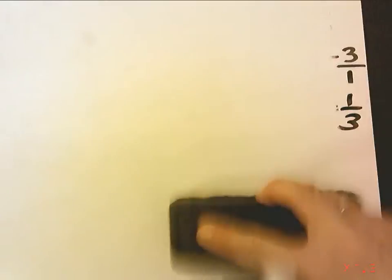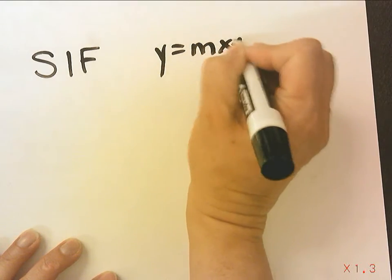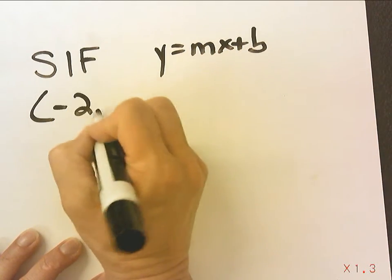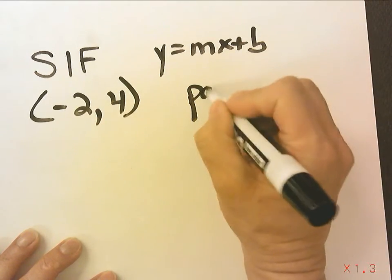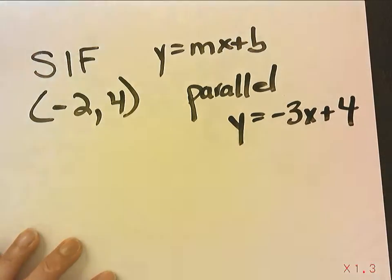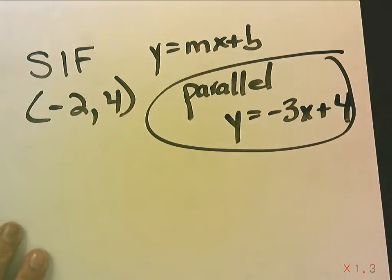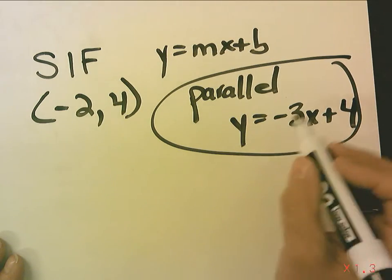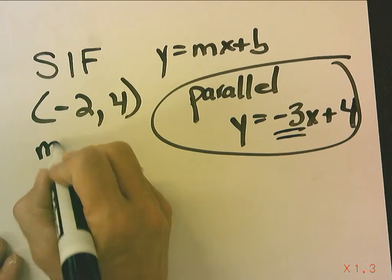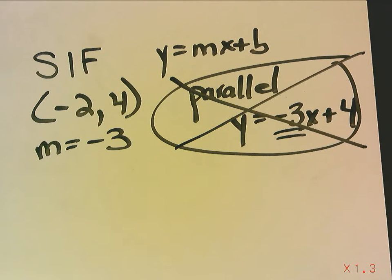Now let's look at the next question. The next question says, write an equation in slope-intercept form. So slope-intercept form is y equals mx plus b, of a line that goes through this point and is parallel to this equation. Now if it's parallel to this equation, that's code word for has the same slope. So what is the slope of this equation? Well, it's negative 3. So once I establish that information, I don't need that equation anymore.